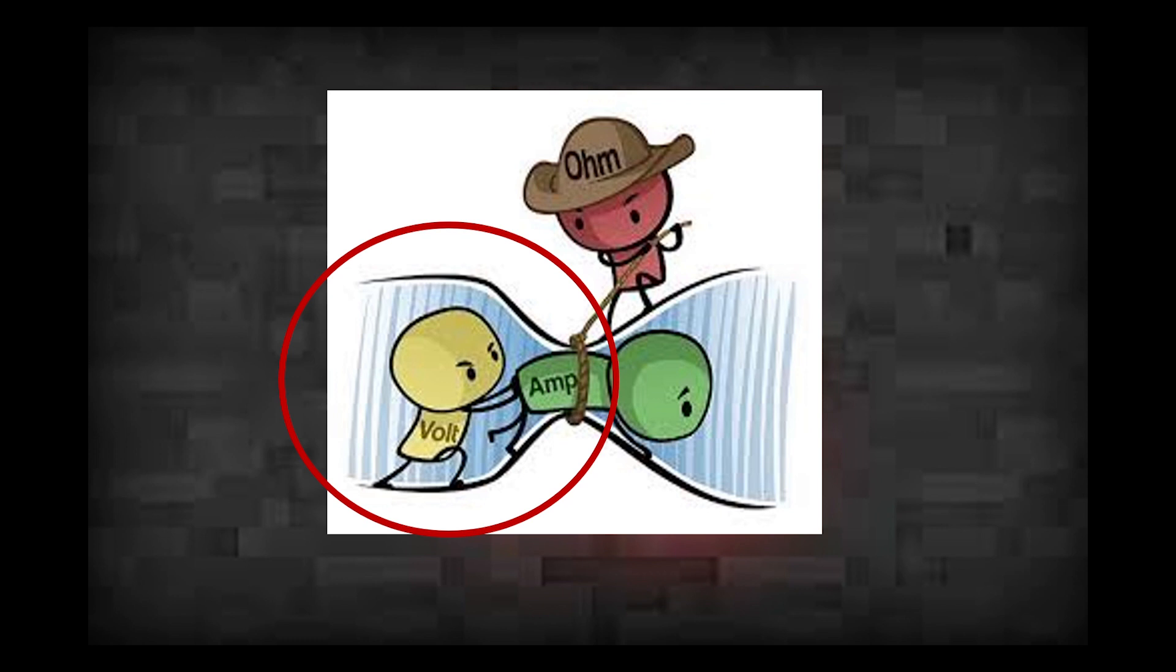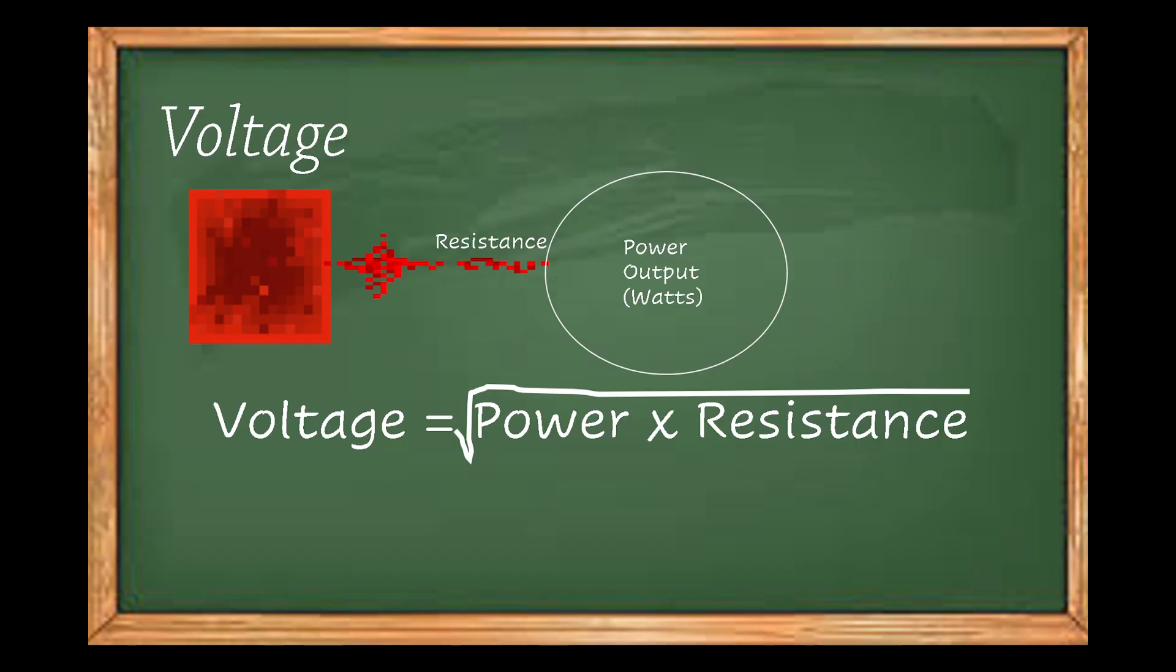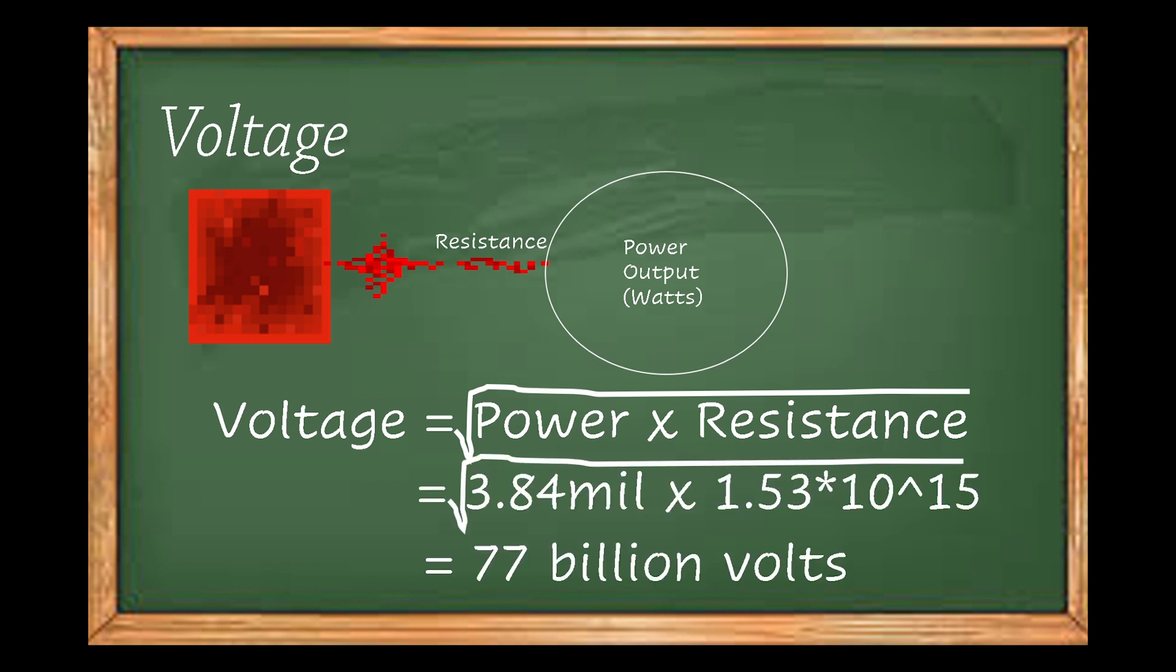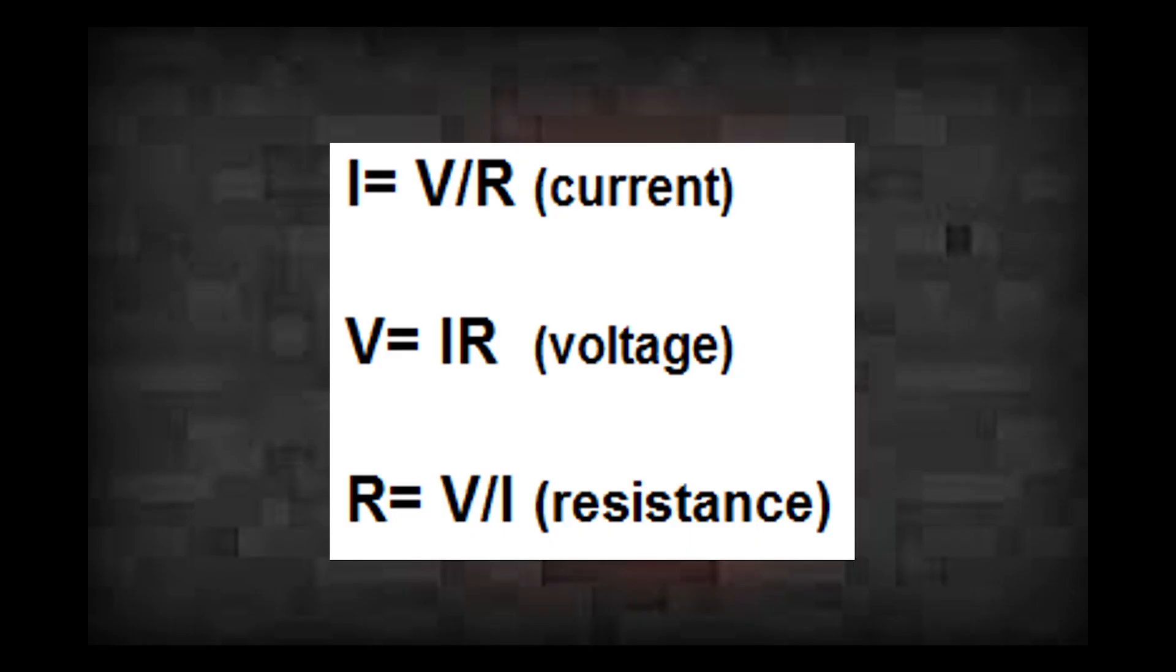As I mentioned, voltage is equal to the square root of resistance times power. And for a single patch of redstone dust, it's 7.66 times 10 to the 10 volts, or about 77 billion volts. Now with the voltage, you can actually quite easily calculate the amperage or current flow rate with this formula. I'll leave that for you to find out.